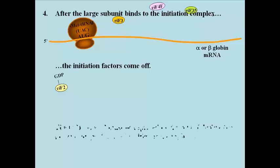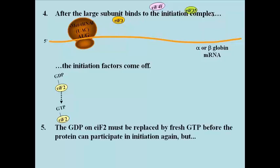If translation is to continue, the GDP on EIF2 must be replaced with another GTP. This is facilitated by other initiation factors not shown here.